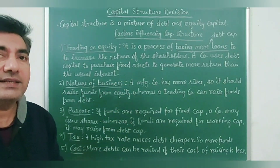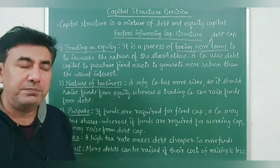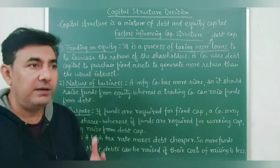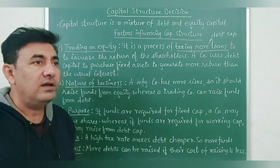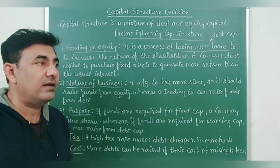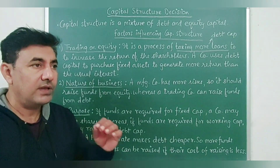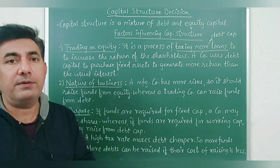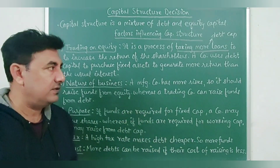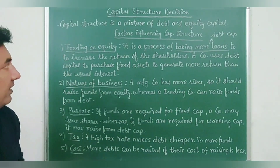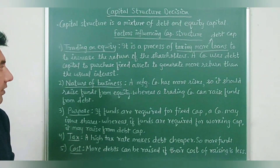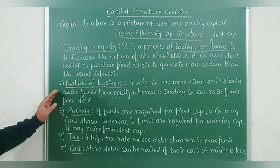Whatever debt capital the company raises, it uses that capital to purchase fixed assets like machinery and equipment, so that they can produce more goods. Their sales volume will be higher, resulting in profits, and they can pay a part of their profit to the shareholders. That makes the concept of trading on equity clear.